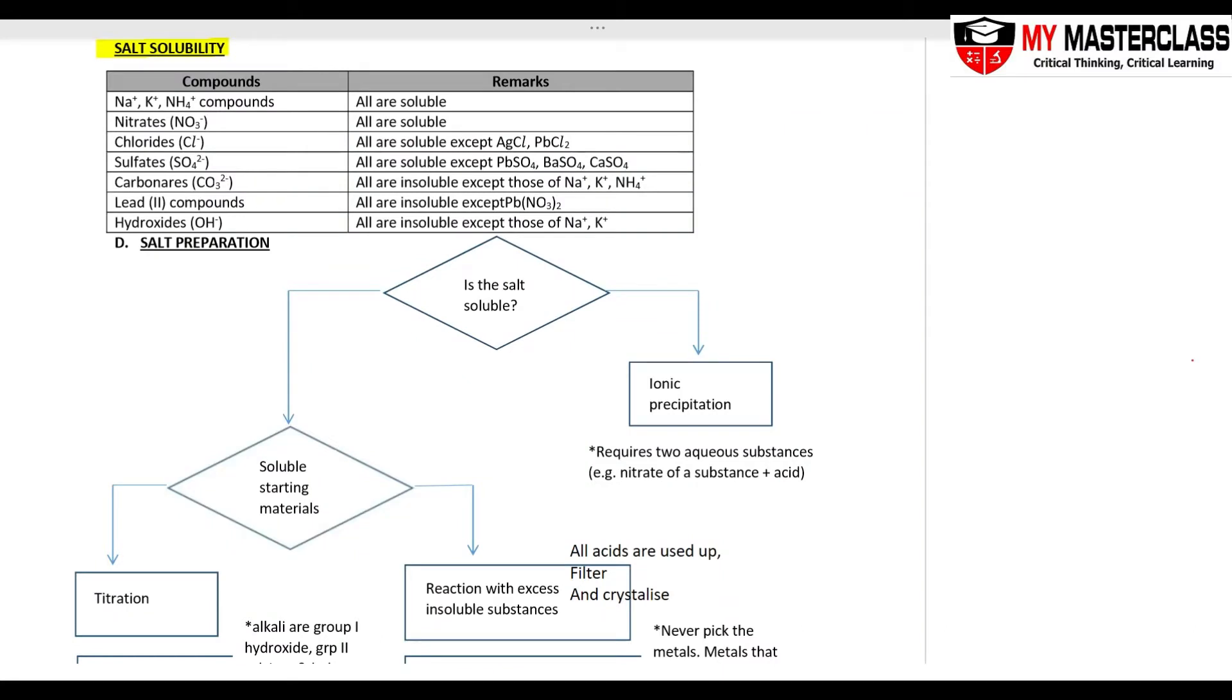Okay, the last salt preparation method is called ionic precipitation, and it is used to prepare a salt that is insoluble. So within our syllabus, if you remember, silver lead chloride, lead chlorides insoluble, barium lead calcium sulfates insoluble—these five salts are all not soluble, they are all solid. We will use the method ionic precipitation. So back to the first question: is the salt soluble? No. Method: ionic precipitation.